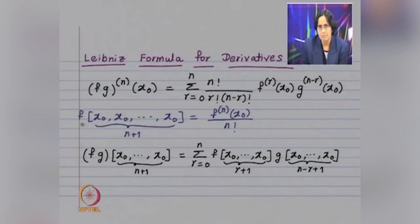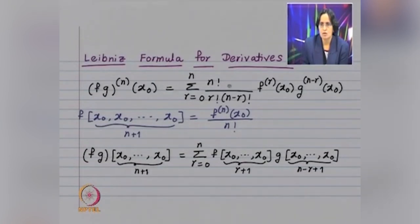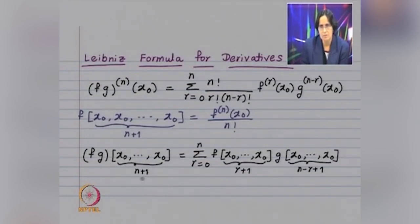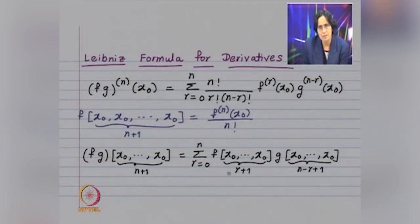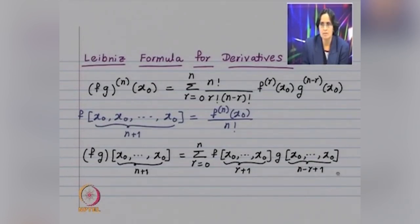The divided difference of f based on x₀ repeated n+1 times equals f⁽ⁿ⁾(x₀) divided by n!. So dividing both sides by n!, the left-hand side becomes the divided difference of f·g based on x₀ repeated n+1 times. This equals a summation where r! is associated with f⁽ʳ⁾(x₀), giving the divided difference of f based on x₀ repeated r+1 times, and (n−r)! is associated with g⁽ⁿ⁻ʳ⁾(x₀), giving the divided difference of g based on x₀ repeated n−r+1 times.